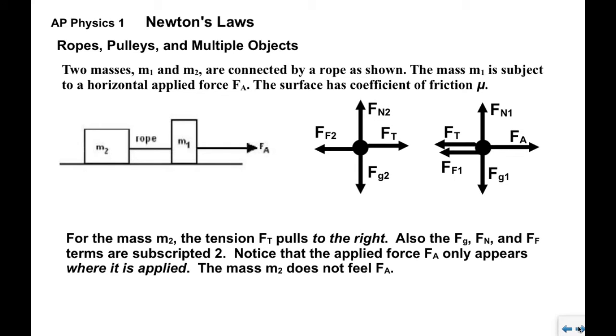When we look at mass M2, the tension in the rope pulls on M2 to the right. The rope pulls with the same tension at both ends, so it pulls inward: left on M1 and to the right on M2. Notice also that the applied force is only felt where it is applied, so it's applied to M1 and not to M2.